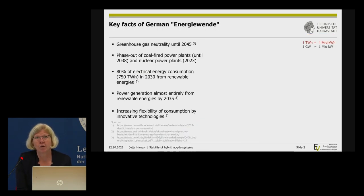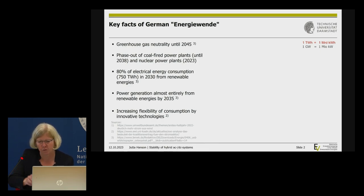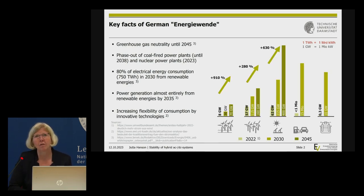Yesterday we saw the key figures from the German energy agenda — the numbers we want to reach. We want to be greenhouse-gas neutral in 2045 and phase out coal-fired and nuclear power plants. Looking at this figure: what does it mean for renewable energies? You see three bars, one for each year from 2022 to 2045.